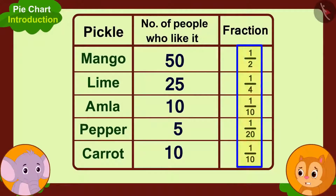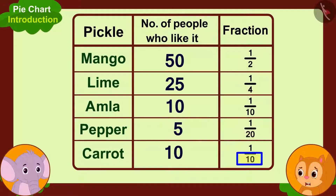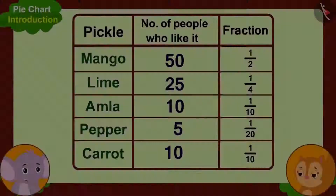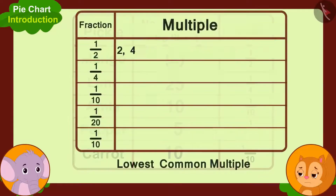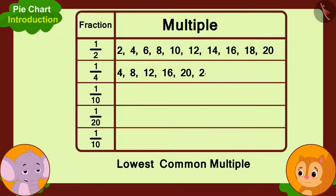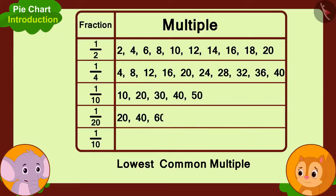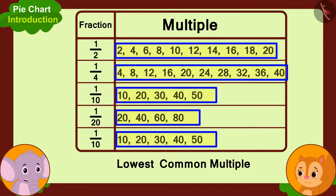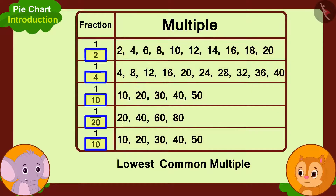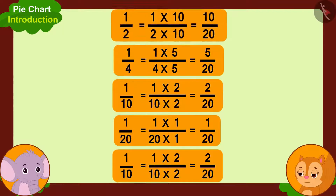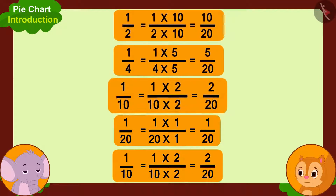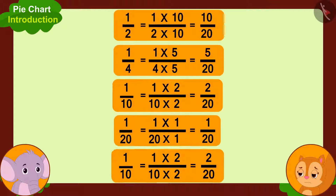'But the total number of parts in all these fractions is different. So how do we represent them?' Appu says, 'To solve this, we will first find the lowest common multiple, or the smallest common multiple, of the total parts of all these fractions. In this way, 20 is the lowest common multiple of these numbers. Now we will write all these fractions so that the total parts of all of them is 20.'